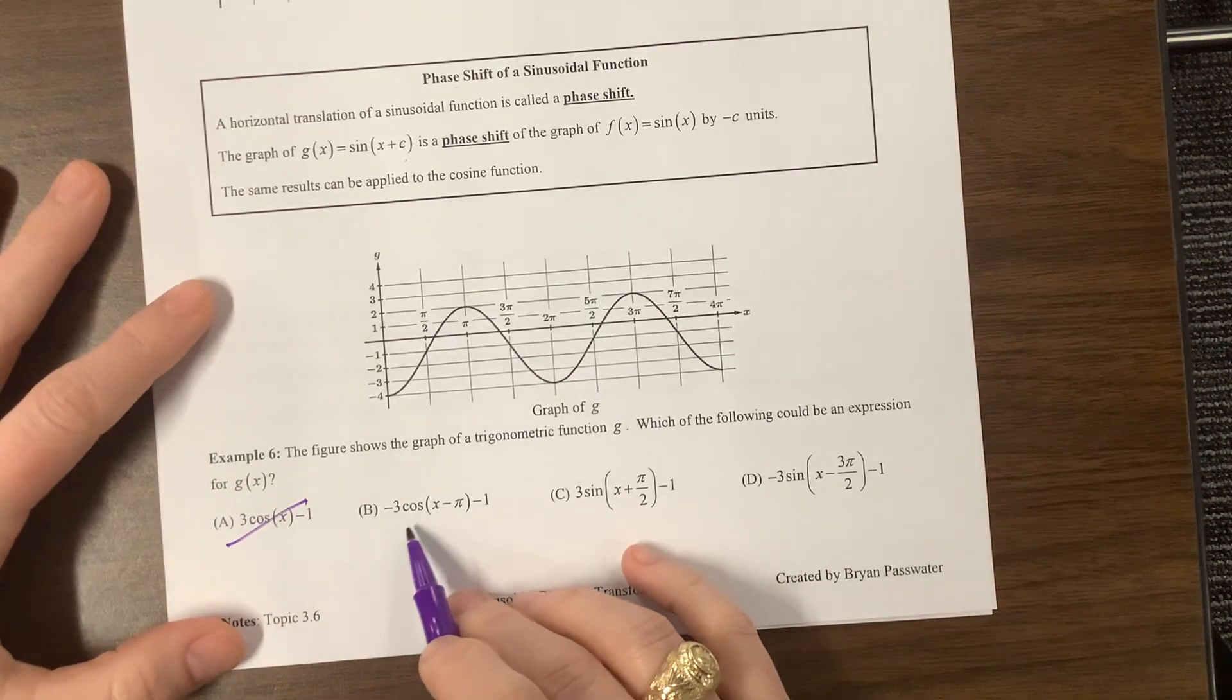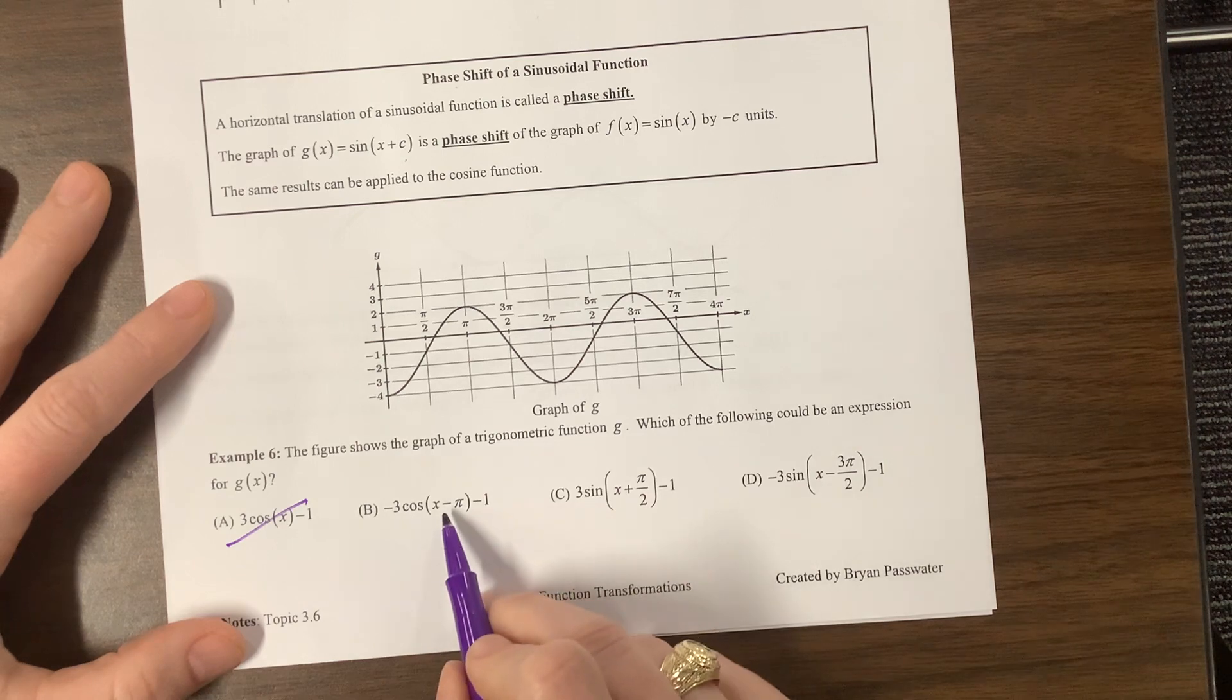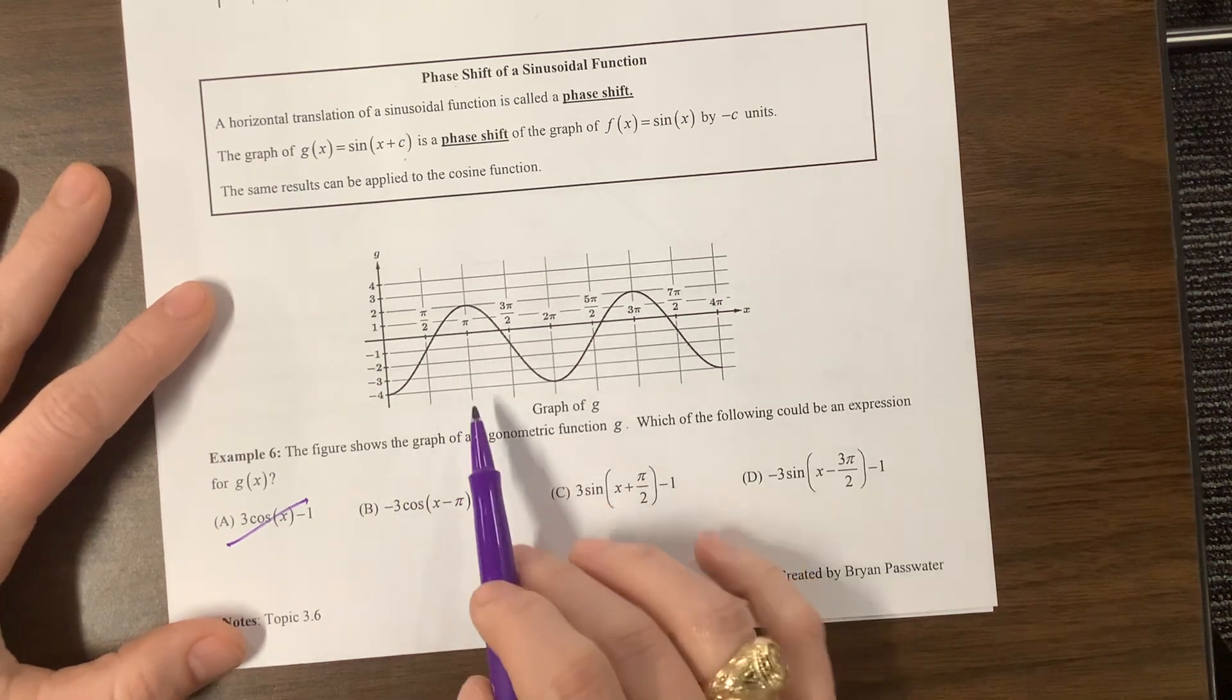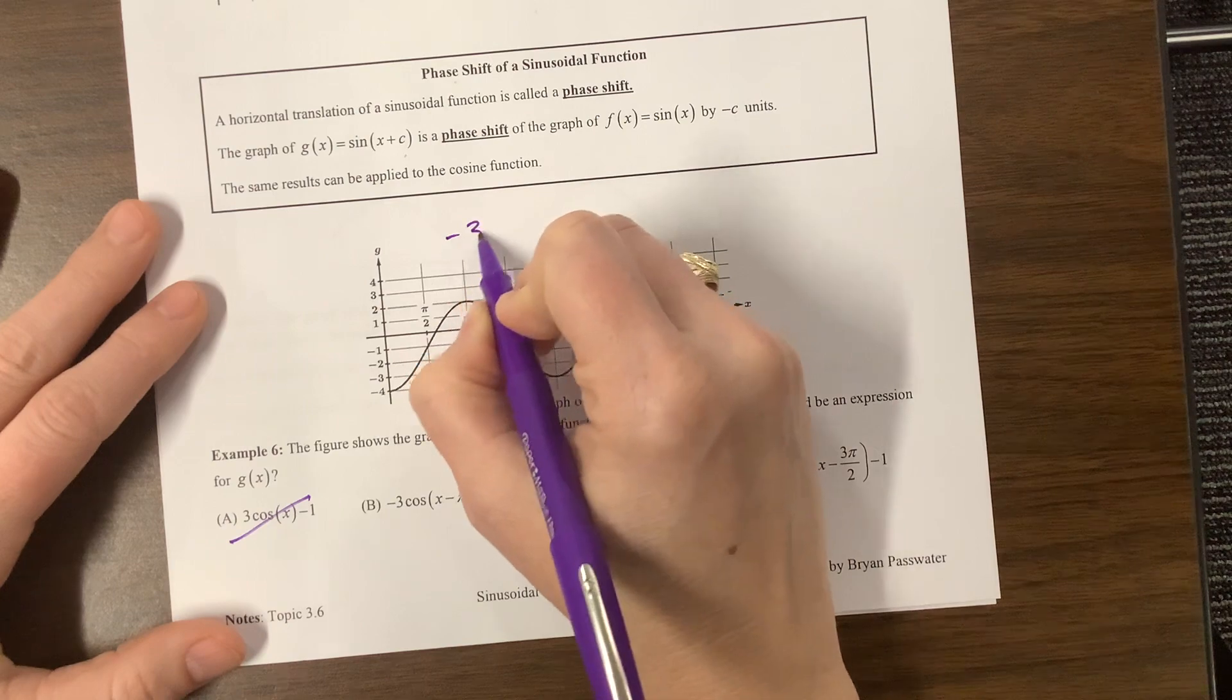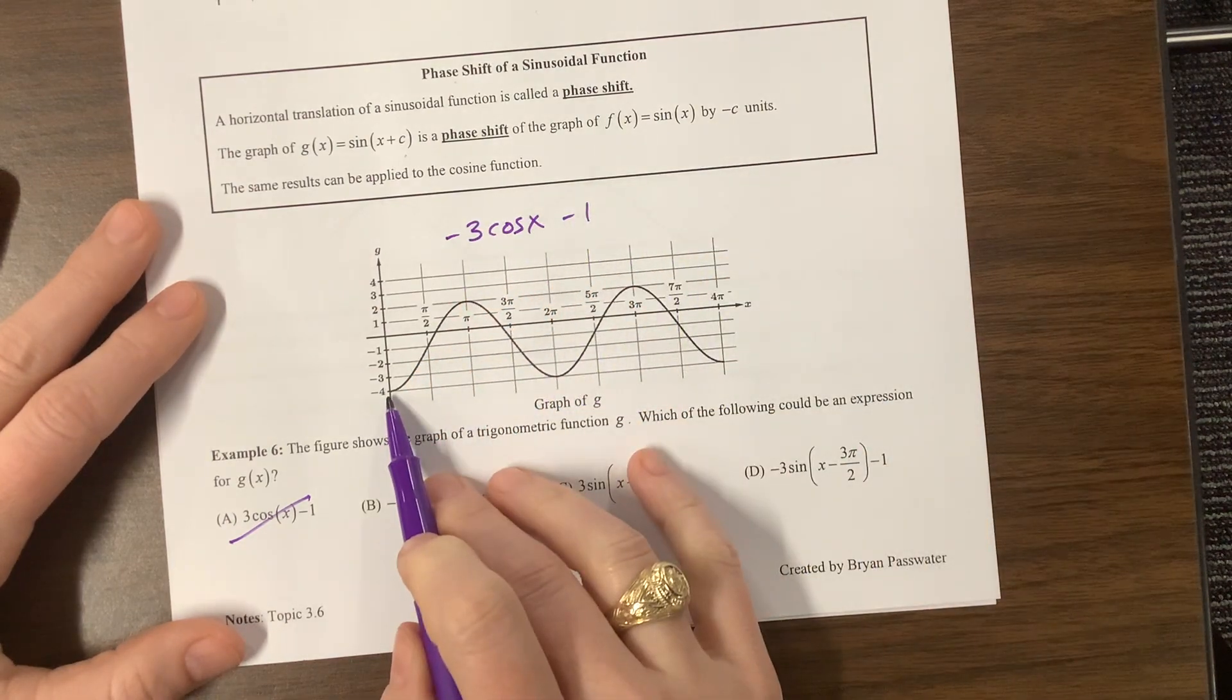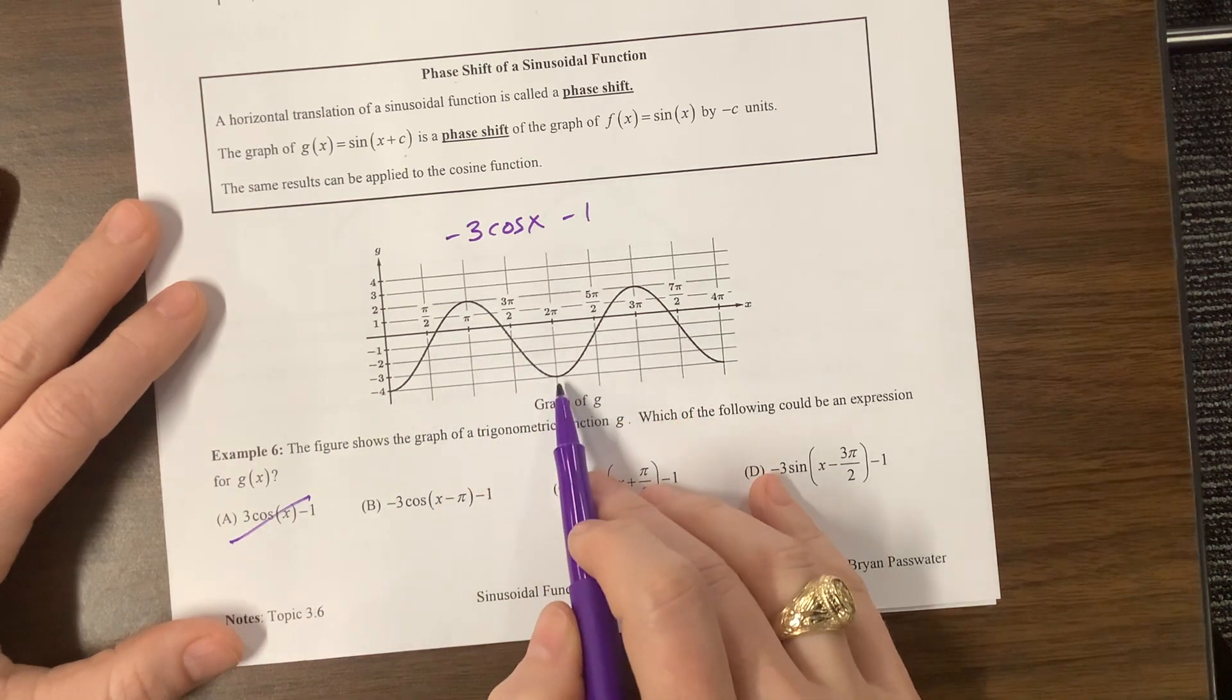This one is saying we start at the negative, but then we have to shift it to the right pi. So if I were at pi, I would be at the very bottom, and we're not. Does that make sense? If I had written this, this graph would be the function negative 3 cosine of x minus 1, because it starts here at the very bottom, and then it gets up to the very top, and then gets back down to the very bottom by 2 pi.